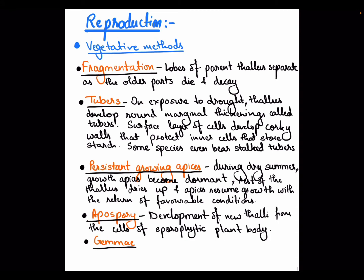Next is apospory. In apospory, the new thallus is formed from the sporophytic plant body. Other vegetative methods form new thallus from the gametophytic plant body, but in apospory it is formed from the sporophyte. This has been observed in some species by scientists, so it is also a method of vegetative reproduction, but it is not a common method. This concludes vegetative reproduction in Anthoceros.